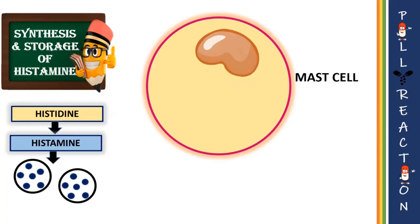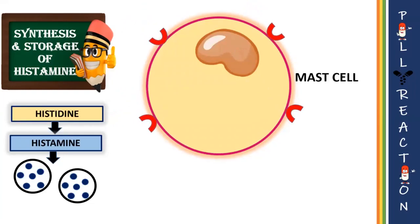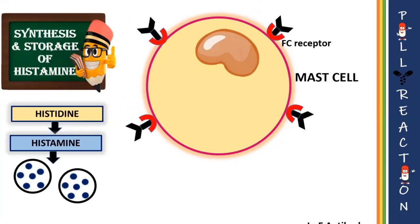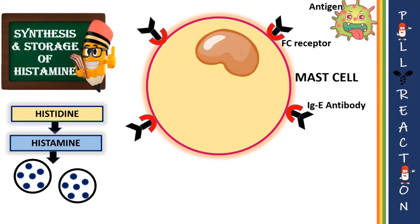Mast cells are mononuclear, consisting of a kidney-shaped or raniform nucleus. The plasma membrane of the mast cells has a fragment crystallizable region — the Fc region — to which circulating IgE antibodies bind.